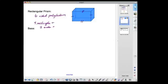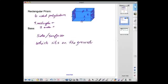I've got a couple different sides here—this is an end and this is an end, and then I have one, two, three, four sides that surround the rectangular prism. The base of a polyhedron is the side or surface which sits on the ground. That's pretty straightforward. On my rectangular prism, here is my base.